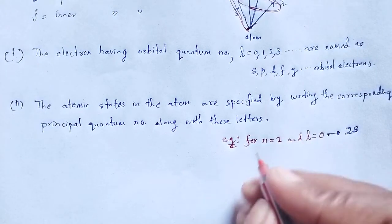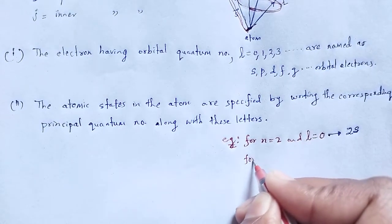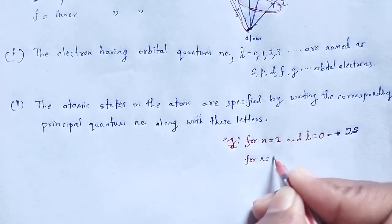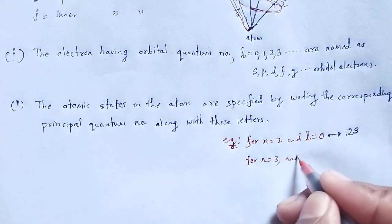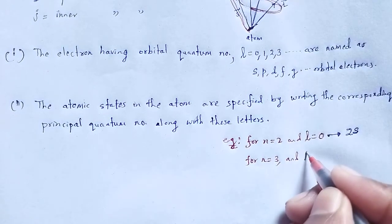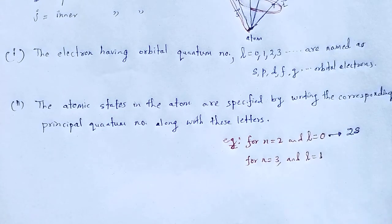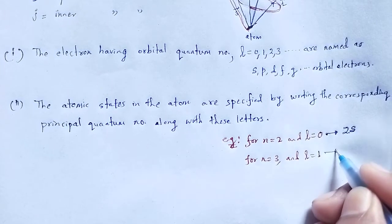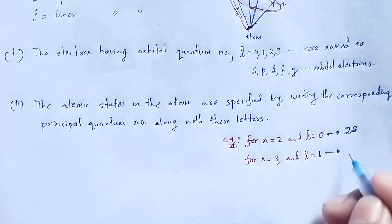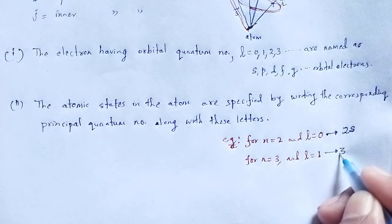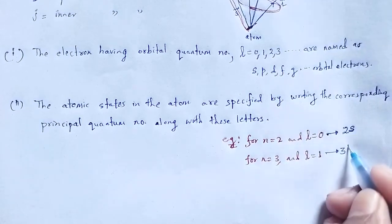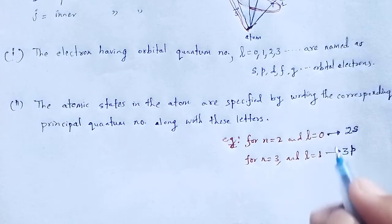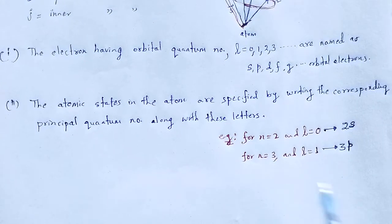Again, for n equals 3 and L equals 1: n equals 3 stands for 3, and L equals 1 stands for P, so the notation is written as 3P. This is the notation.